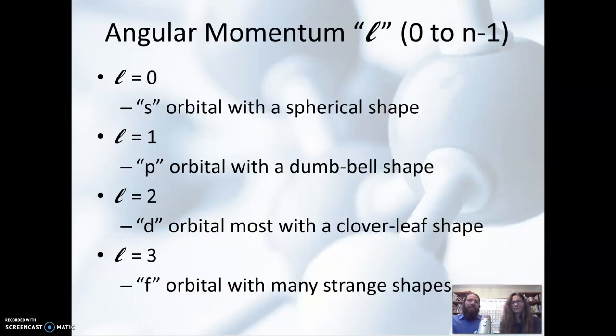The next quantum number is what we call angular momentum, and it's noted with an L, and oftentimes it's italicized. And if we know our n value, we know the possible values for L, because L can be zero, so it can always be zero, up to n minus one. So if n equaled one, then L could only be zero. But if n was two, L could be zero or one, and so on.